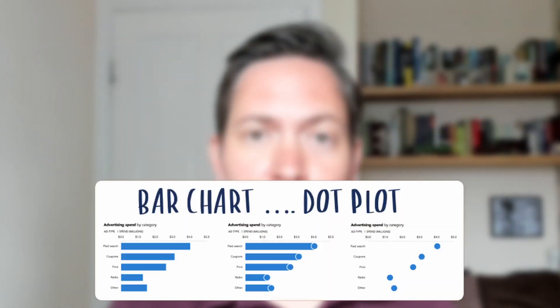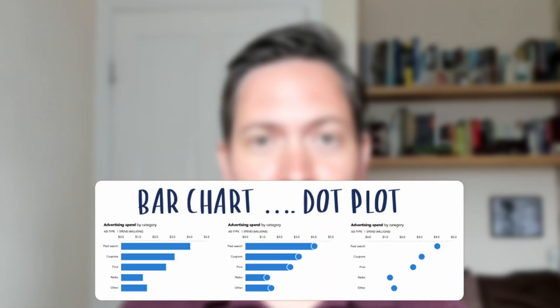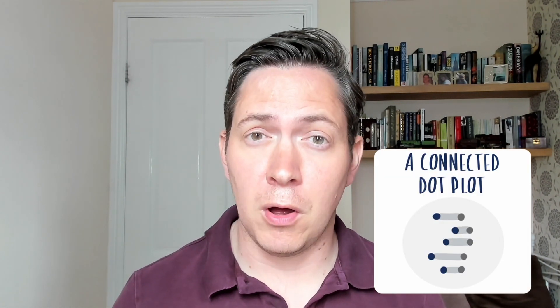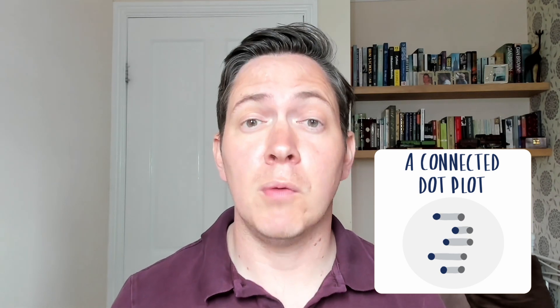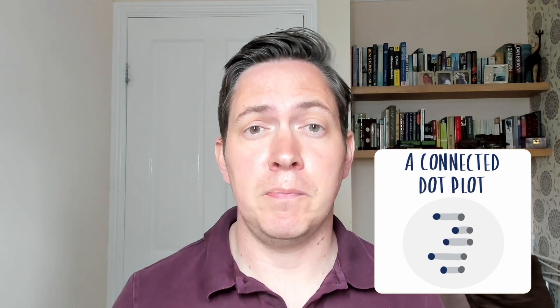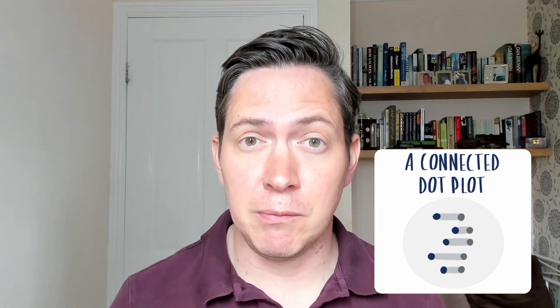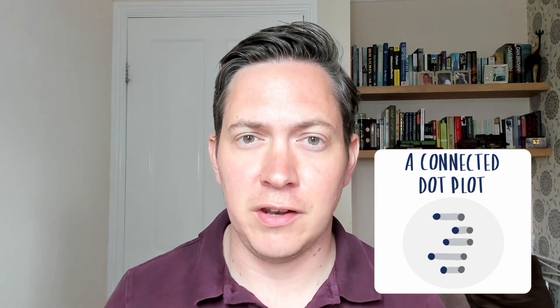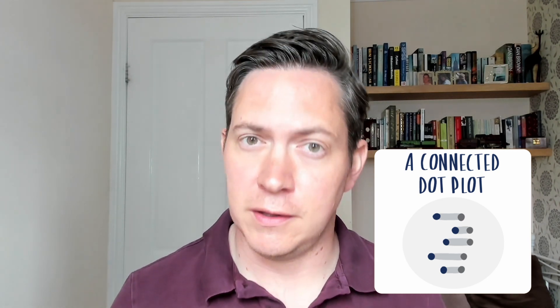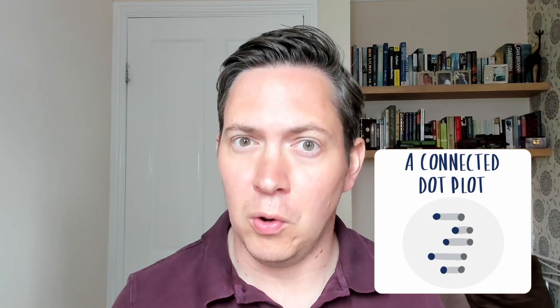One way to think about it is as an alternative to a bar chart, and you can see here how we can transition from those bars to this Cleveland dot plot. An additional common variation is the connected dot plot. It functions in the same way as the Cleveland dot plot but allows you to add two or more data series, building the additional element of a connecting line, which emphasizes the difference between the two or more dots.